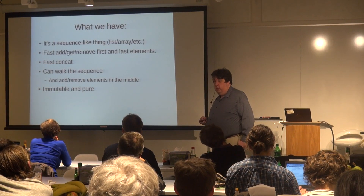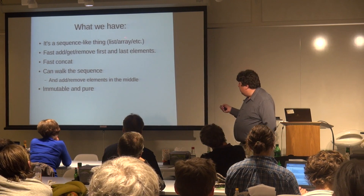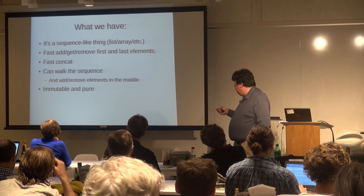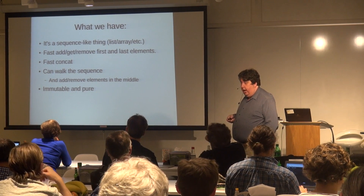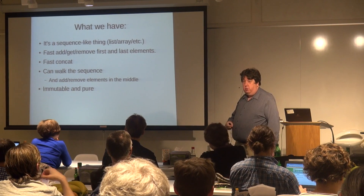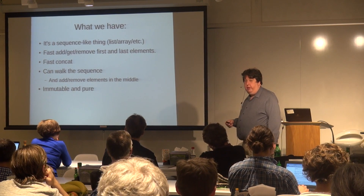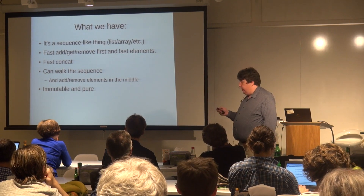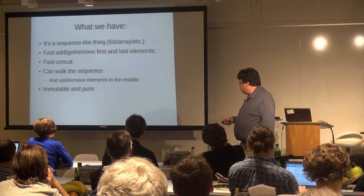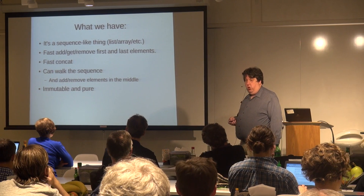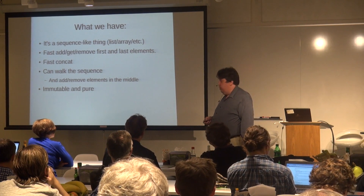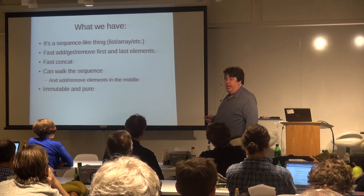So now we have the sequence-like thing: very fast add, get, and remove of the first element; fast concatenation; we can walk the sequence and add and remove items in the middle; and it is immutable and pure with pretty good memory utilization. We're not getting the pony or the Xbox, but we at least got our data structure.